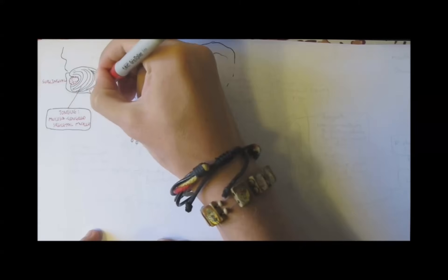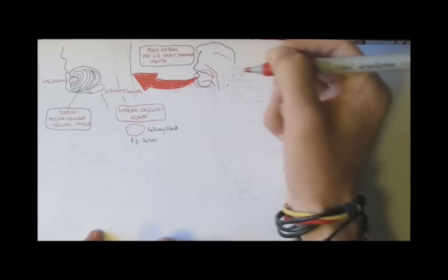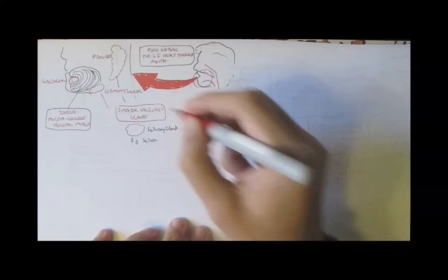Then we have submandibular, under the mandible, and lastly the parotid glands, located here.